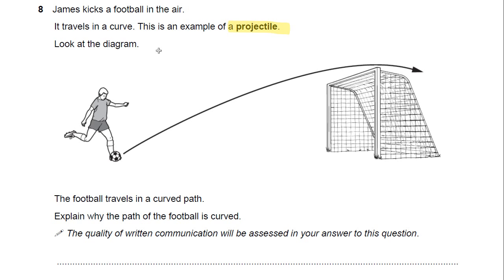Look at the diagram. So this is the shape of what we call a parabola. The football travels in a curved path. Explain why the path of the football is curved.